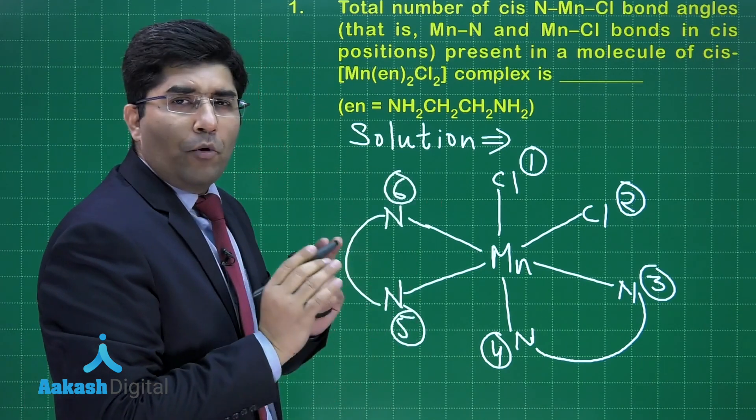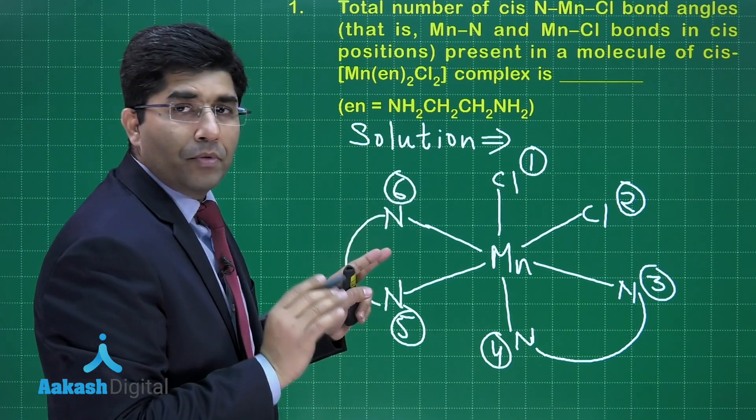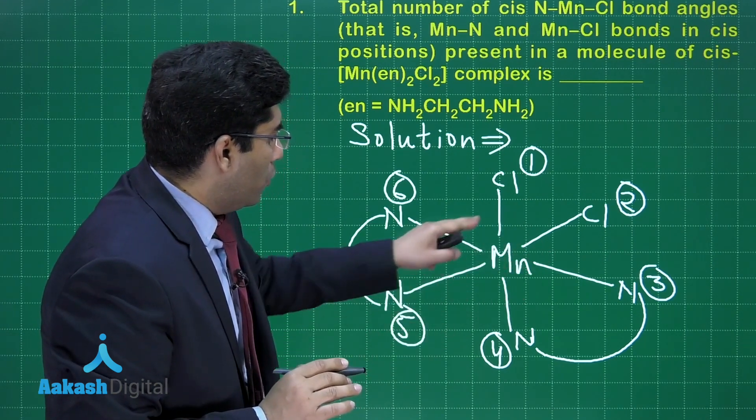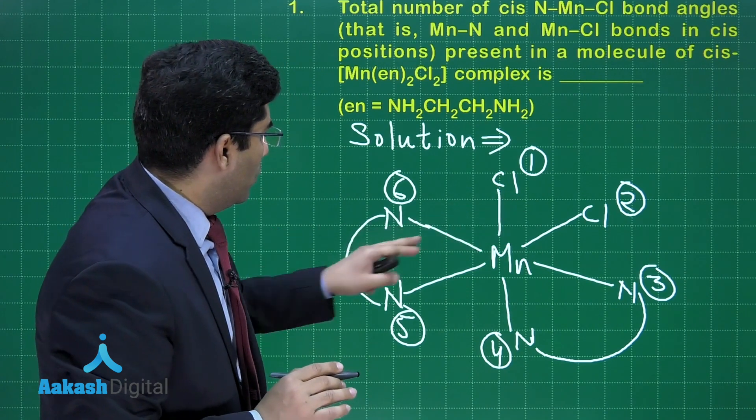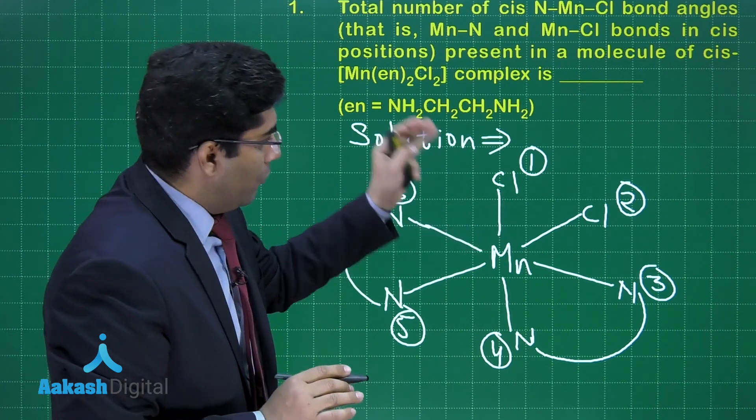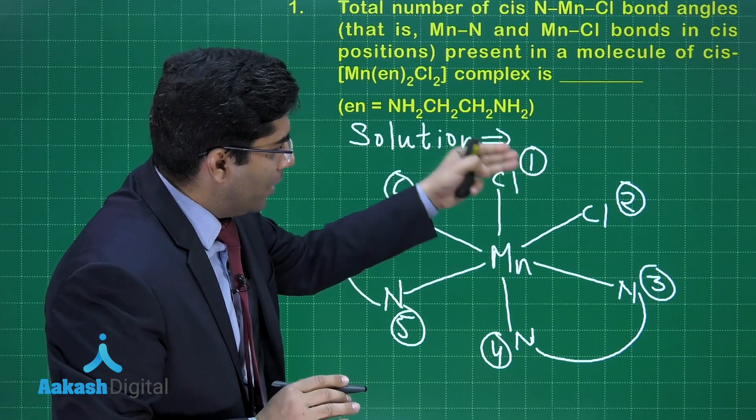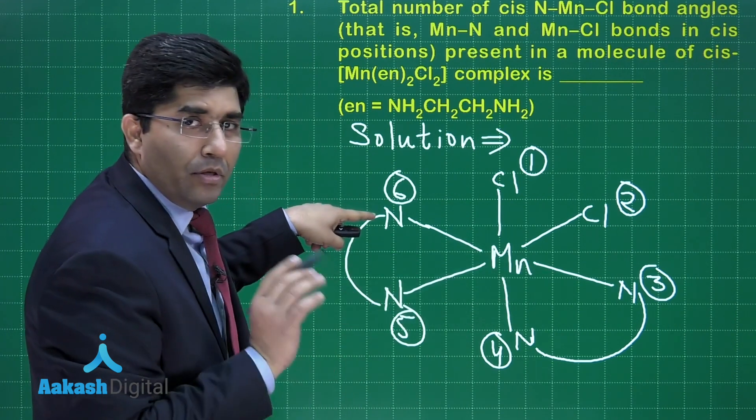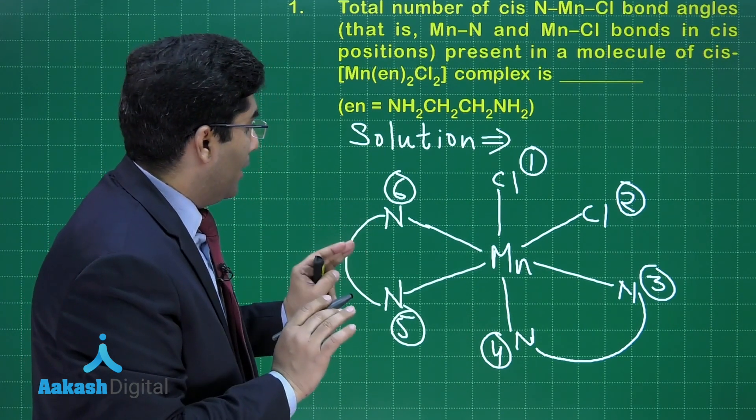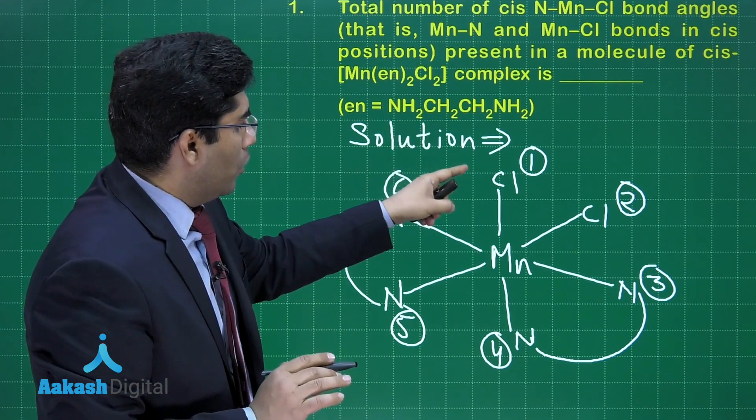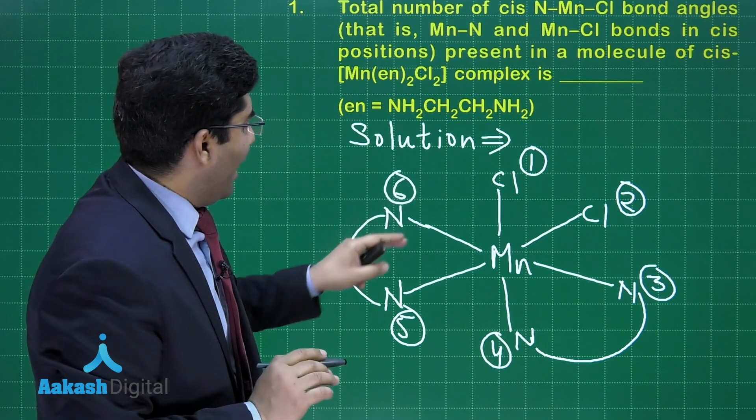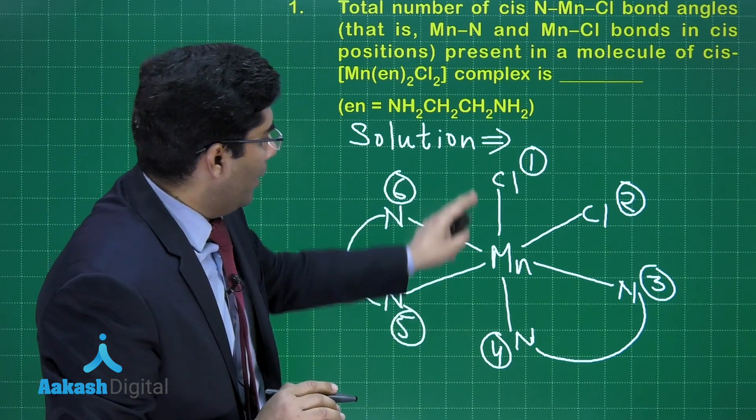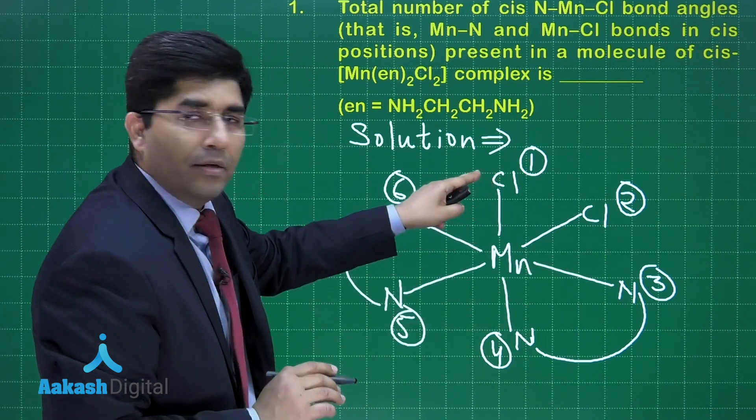Now, let us count all the possible N-Mn-Cl bonds. So, 3-2, 4-2, 5-2, and 6-2. With respect to that chlorine which is having the number 2, we have 4 nitrogen atoms, so there are 4 angles. And if we talk about the chlorine which is having the number 1, then the angles will be 6-1, 5-1, 4-1, and 3-1.